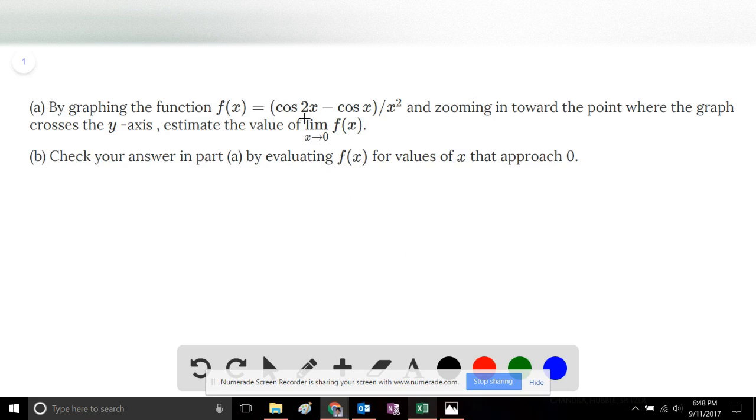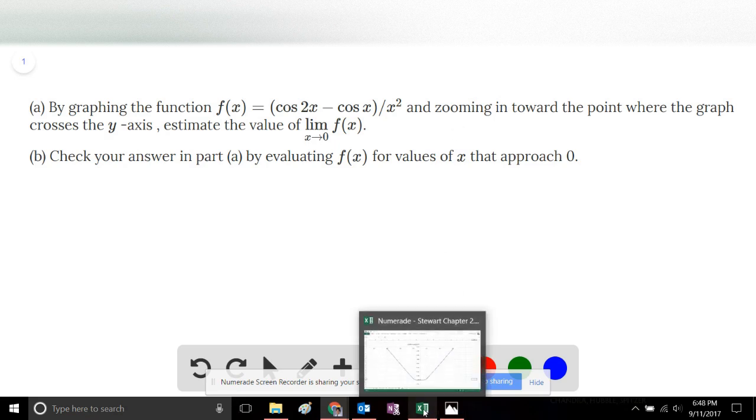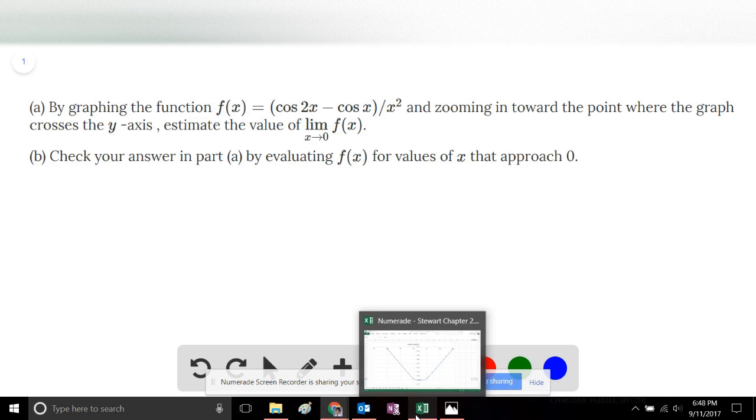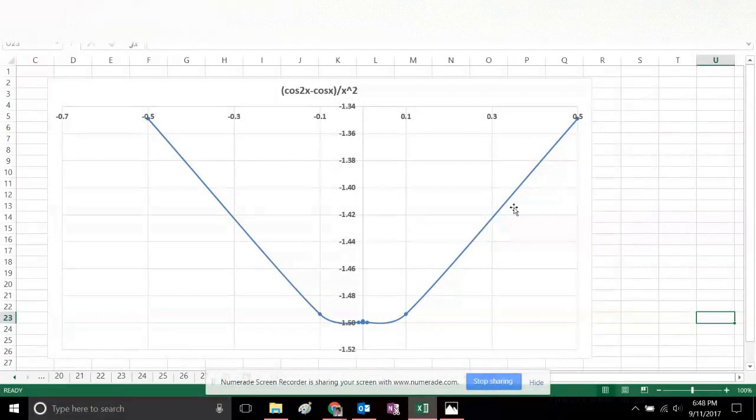So we're going to take this function, cosine of 2x minus cosine of x, that whole quantity divided by x squared, and we're going to use a graphing calculator, or in this case a graphing spreadsheet, and investigate the behavior of the function as we approach x equals 0 from the left and from the right.